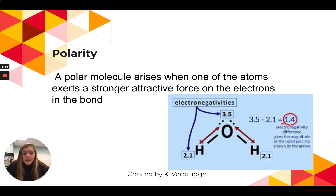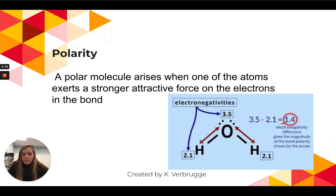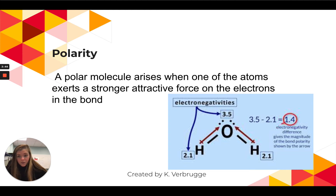So, polarity. A polar molecule arises when one of the atoms exerts a stronger attractive force on the electrons in the bond. Polar molecules only arise in covalent bonds — you can have a polar covalent bond or a non-polar covalent bond. This is all determined by electronegativity. The trend is that as you go up and to the right on the periodic table, electronegativity gets stronger, because electronegativity is the strength of an element to pull electrons towards itself.